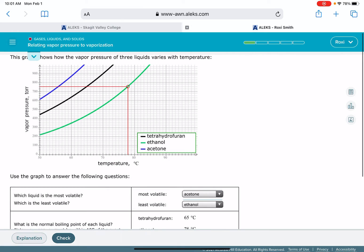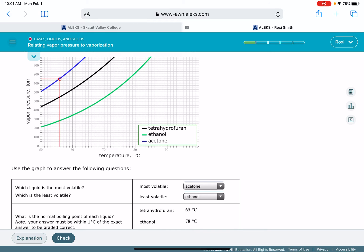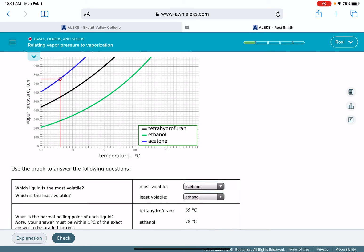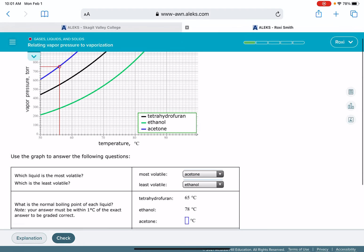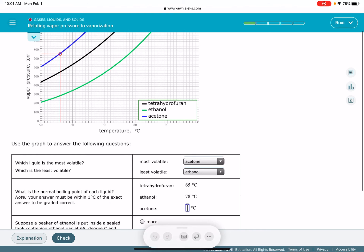And then last but not least, acetone. Again, we want to be sticking with 760 torr. Normal boiling point refers to the boiling point at 1 atm or 760 torr. That is 51, 52, 53, 54, 55, 56 degrees Celsius.